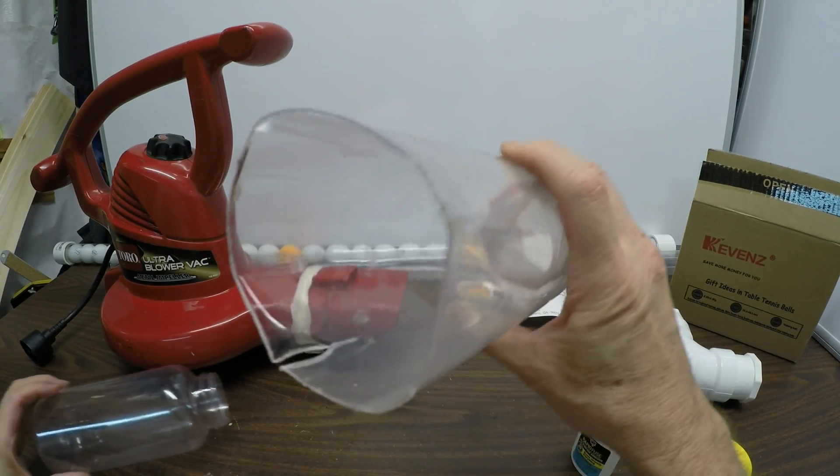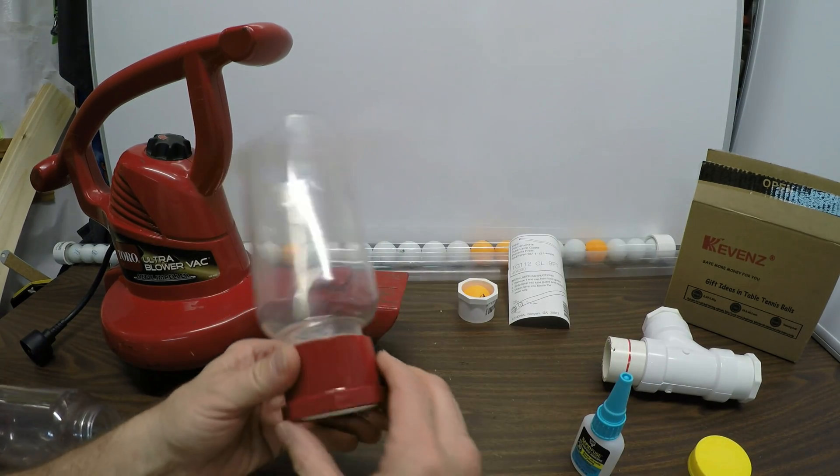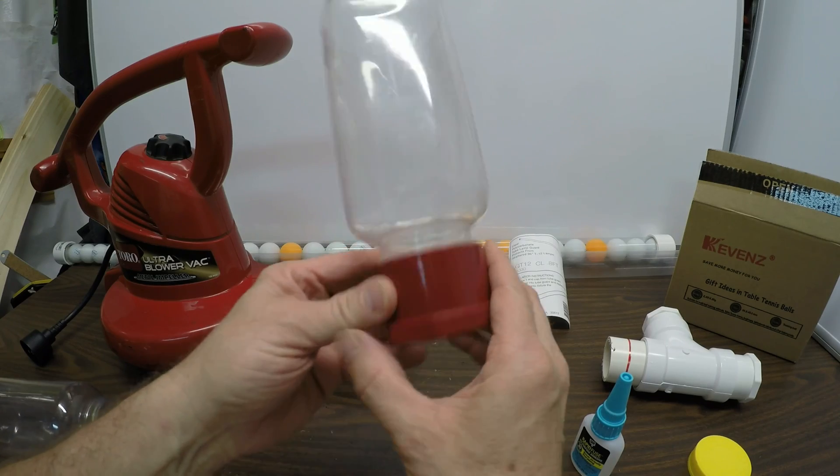I actually used a heat gun and flattened it out a little bit. That helped it really kind of wedge in there. Cost a little over a buck, maybe a buck and a half.